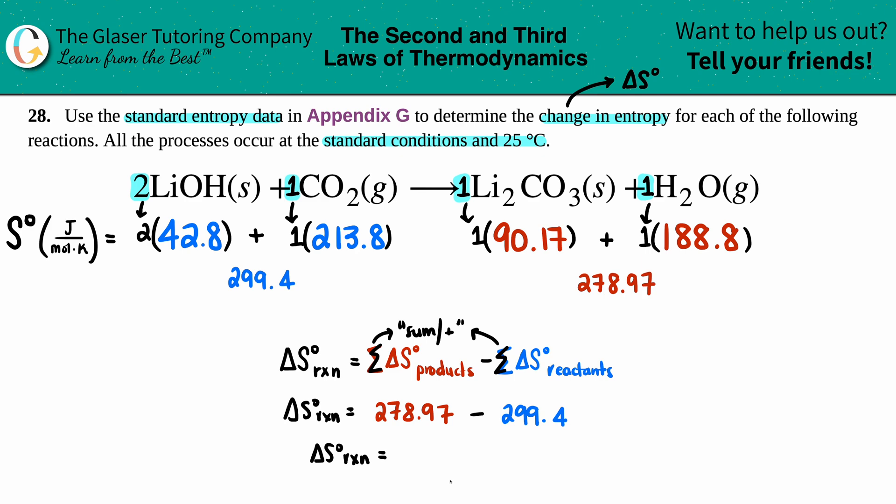Okay, let's see. Delta S for the whole entire reaction is 278.97 minus 299.4, and the answer here with correct sig figs, I see that I only have one sig fig after the decimal, so we should only have one sig fig after the decimal, so it'd be negative 20.4.